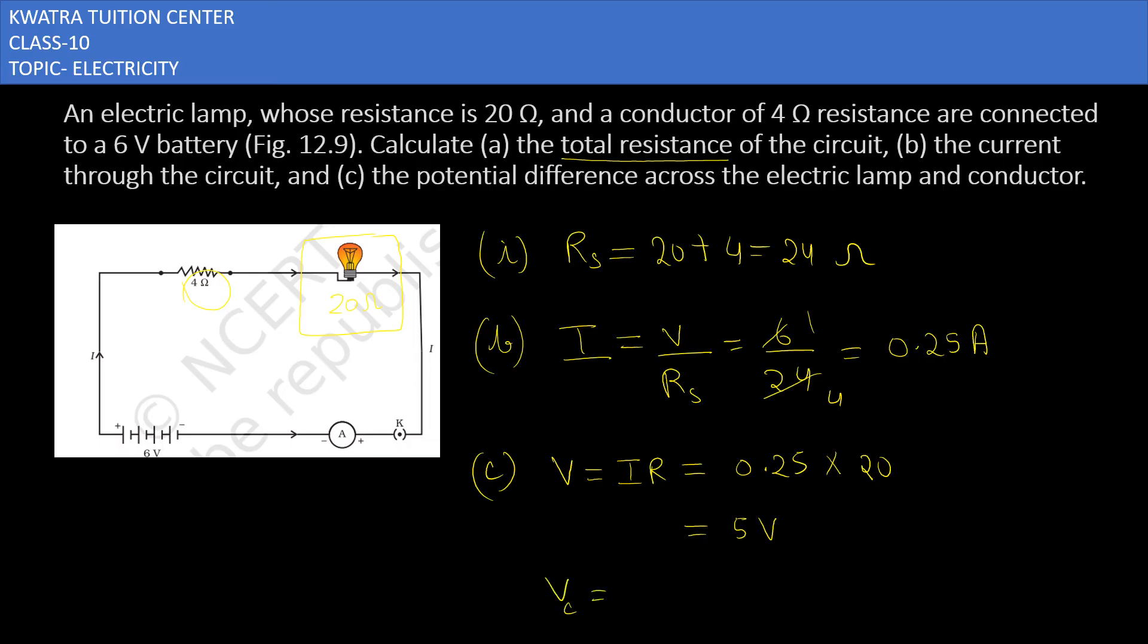How much of your conductor is here? It will be 4 ohm. So how much of your potential is here? I into resistance. How much of I is here? 0.25. Same. And how much resistance is here? It is about 4 ohm. So 0.25 into 4 ohm will give you 1 volt.